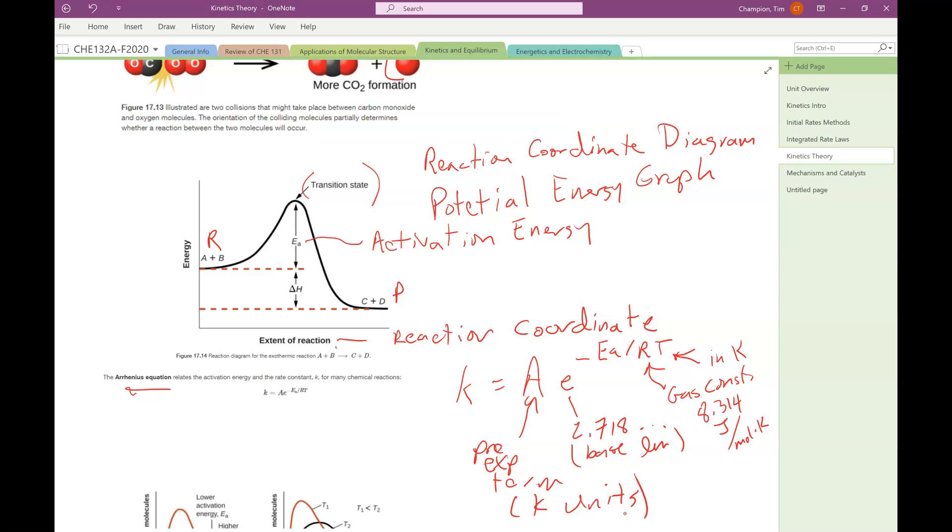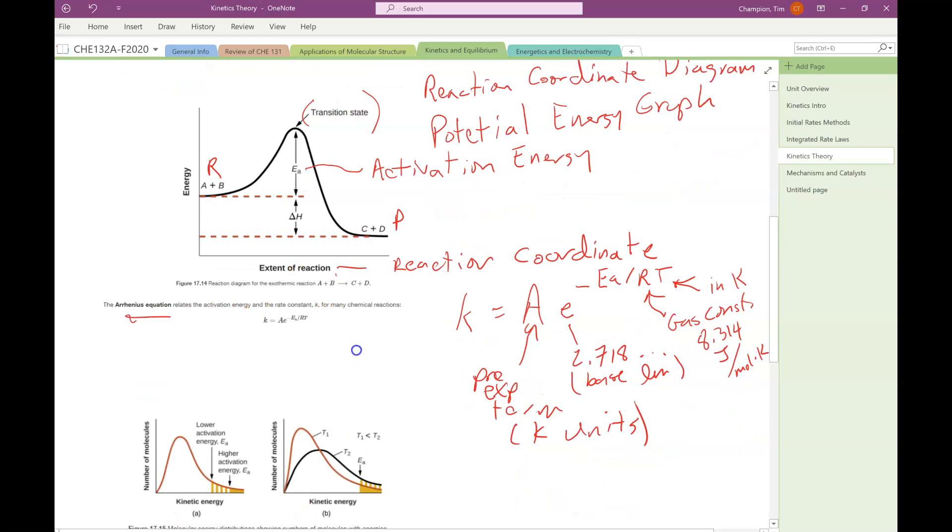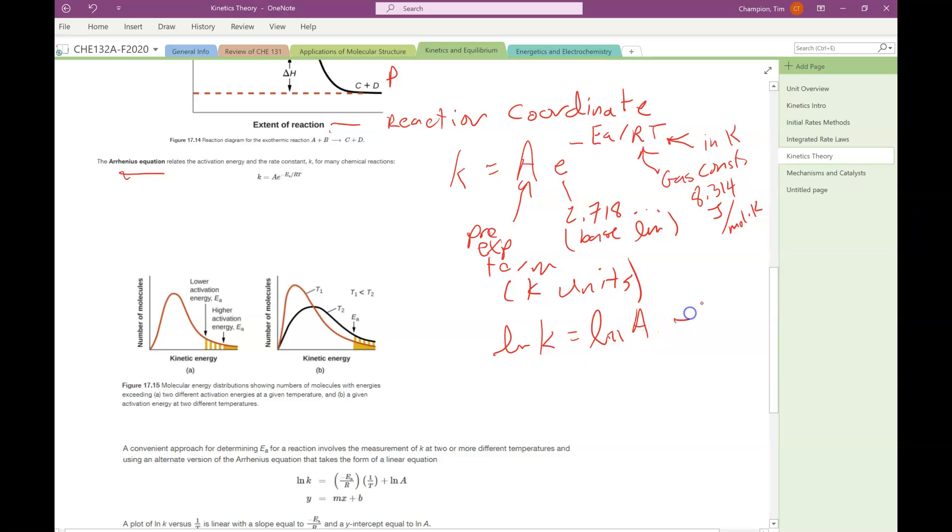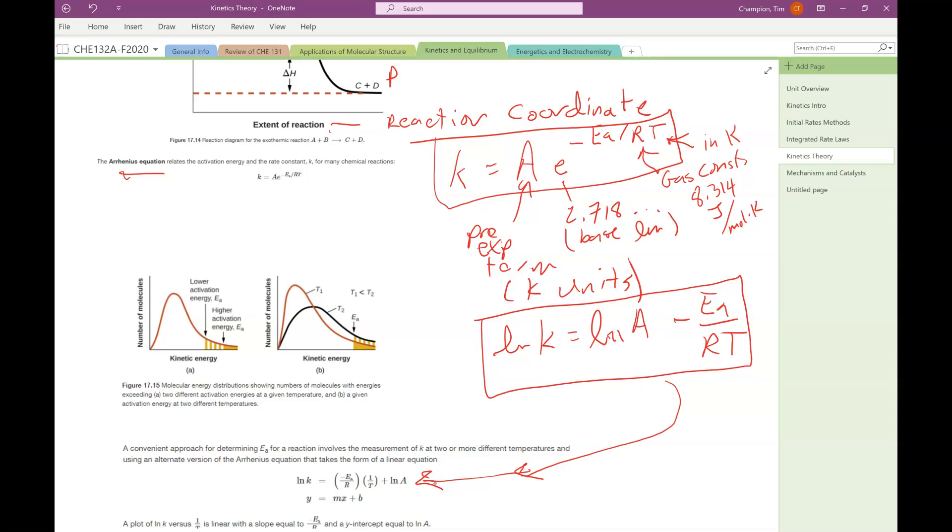That equation has a logarithm version. If you take the natural log of everything, you get ln K equals ln A and then negative E sub A over RT. We can break this out further and separate out 1 over T and negative E sub A over R. That gives you a straight-line equation where ln K could be Y, negative E sub A over R is your slope, 1 over T is your X, and the Y-intercept would be ln A.